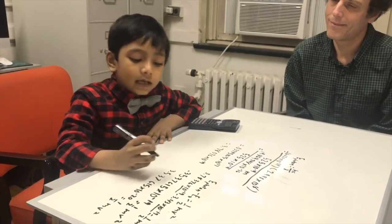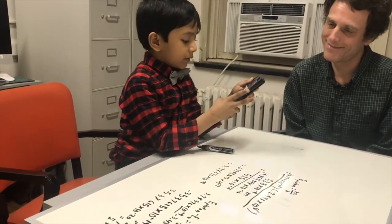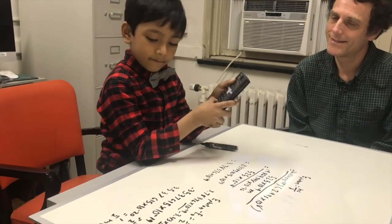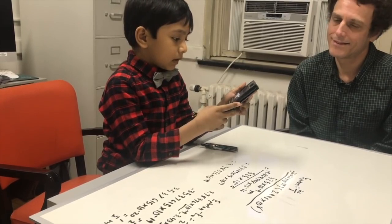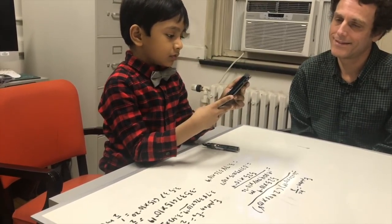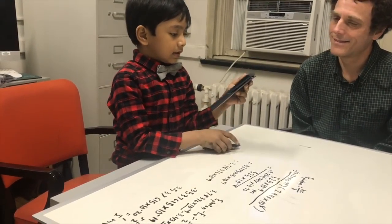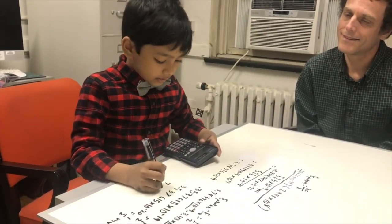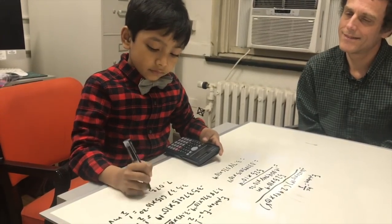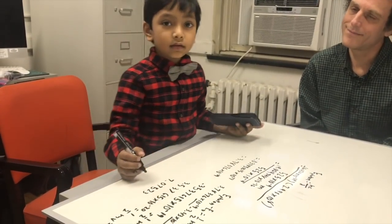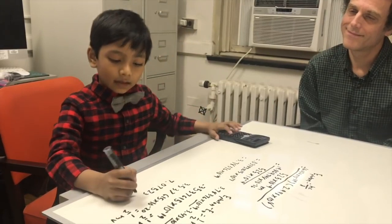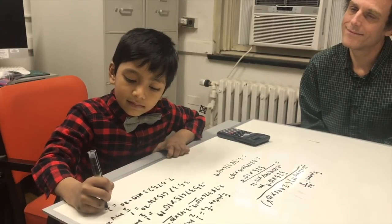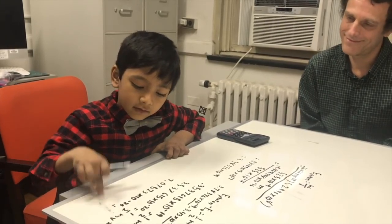Now we multiply both sides by 2. So 3.537615 multiplied by 2 is 7.07523. Therefore 7.07523 times 10 to the negative 20 equals mv squared.